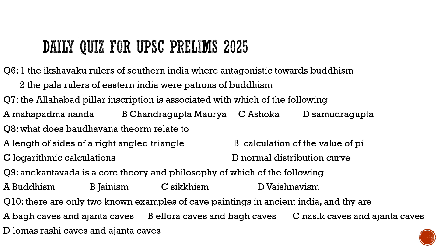Question nine: Anekantavada is a core theory and philosophy of which of the following — Buddhism, Jainism, Sikhism, or Vaishnavism? Anekantavada is the core theory and philosophy of Jainism, dealing with metaphysics. So the correct answer to question nine is option B: Jainism.